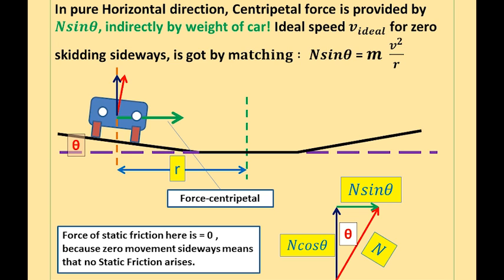So at this ideal velocity, the car will not tend to slide outwards or inwards on the angled track. That is the whole meaning of matching both of them. And that is why static friction is zero.